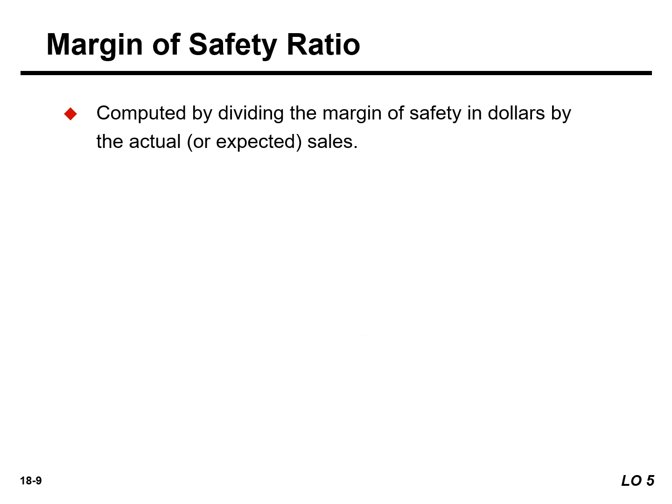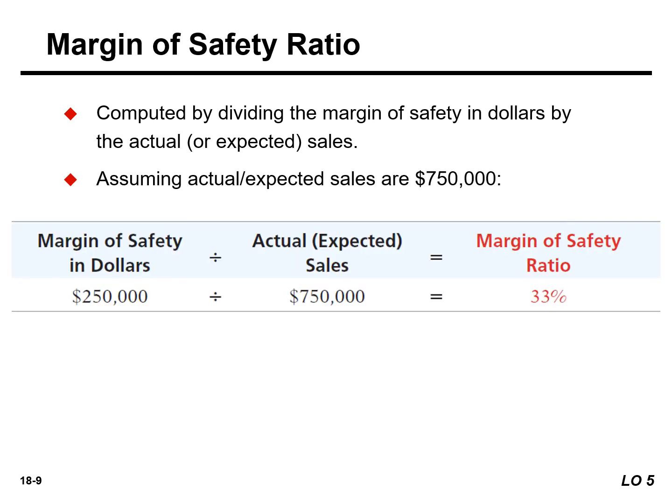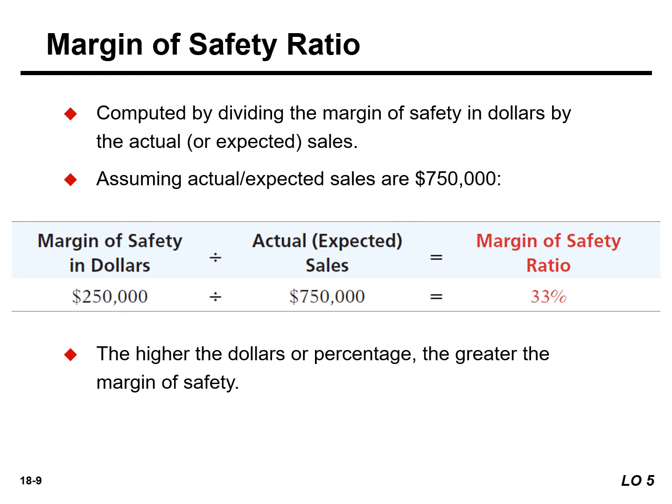The margin of safety ratio is the margin of safety in dollars, which we just calculated, divided by the actual or expected sales. This means that the company's sales could fall by 33% before it would operate at a loss. The higher the dollars or the percentage, the greater the margin of safety.